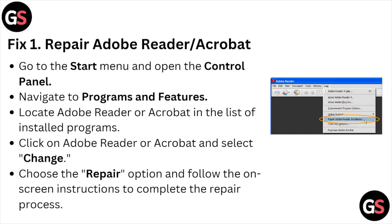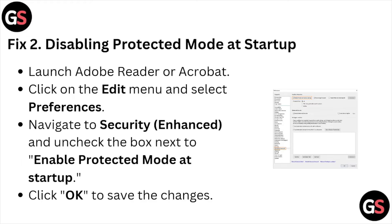Navigate to Programs and Features. Locate the Adobe Reader or Acrobat in the list of installed programs. Click on Adobe Reader or Acrobat and select Change. Choose the Repair option and follow the on-screen instructions to complete the repair process.